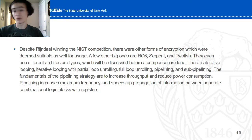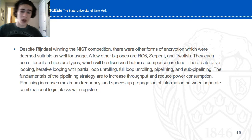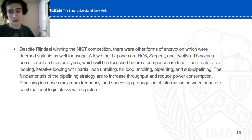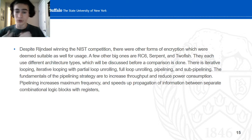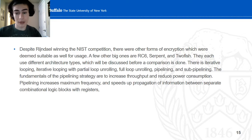Going over the architectural comparison — despite Rijndael winning the AES contest, the other encryption algorithms entered into the contest have also been used. A few notable ones are RC6, Serpent, and Twofish. These use different architectural types, so I'll do a little comparison. There's iterative looping, iterative looping with partial loop unrolling, full loop unrolling, pipeline, and sub-pipeline. This has to do with how the key information and the blocks are propagated.